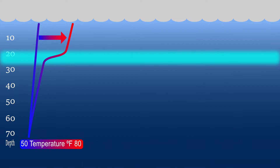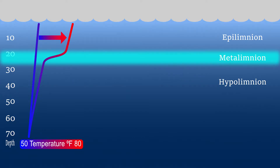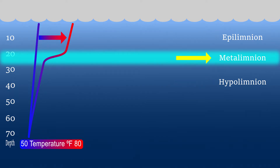This stratification forms three separate layers of water: the epilimnion, the metalimnion, and the hypolimnion. The epilimnion is the warmer, less dense, more buoyant water near the lake surface. The hypolimnion is the cooler, more dense, less buoyant water near the lake bottom. The layer separating the upper and bottom layers is the metalimnion, also known as the thermocline.